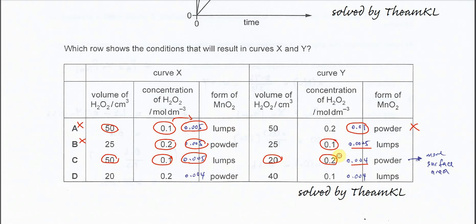The concentration of Y is 0.2, which is double compared to X. So we know this will react faster because the concentration of H2O2 is higher. Furthermore, the MnO2 is in powder form, so it has higher surface area and will give a faster rate of reaction. Therefore the answer must be C.